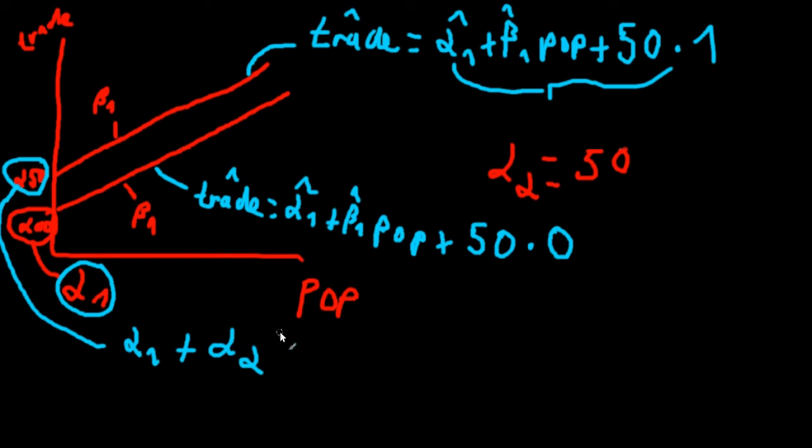So I hope this has helped you understand the intuition behind a dummy variable. It's actually quite simple and a very useful tool, because there are many explanatory variables that are not continuous. However, they can be incorporated into our model by simply coding them as a dummy variable. There are literally millions of possibilities for how you could use a dummy variable.